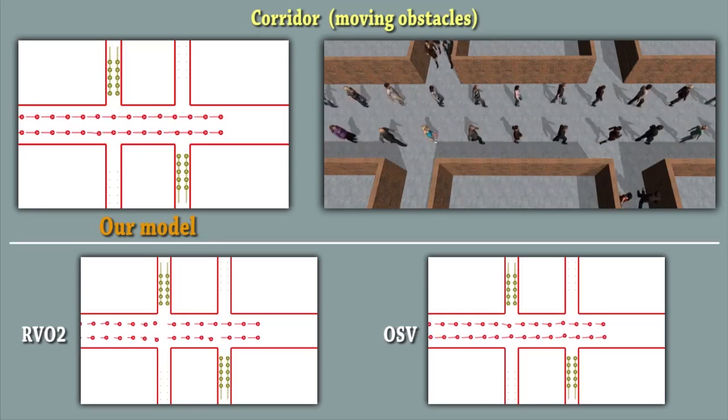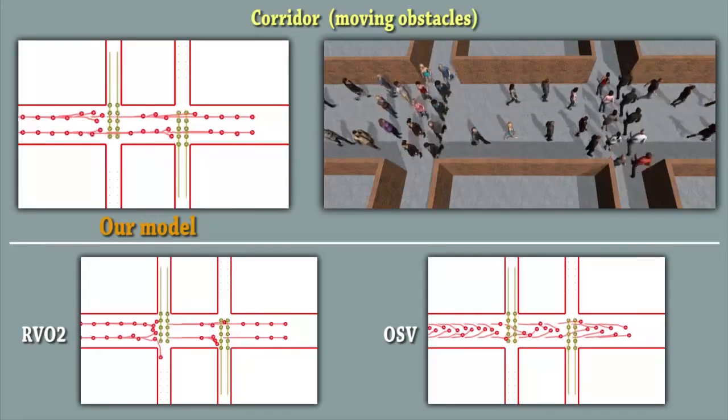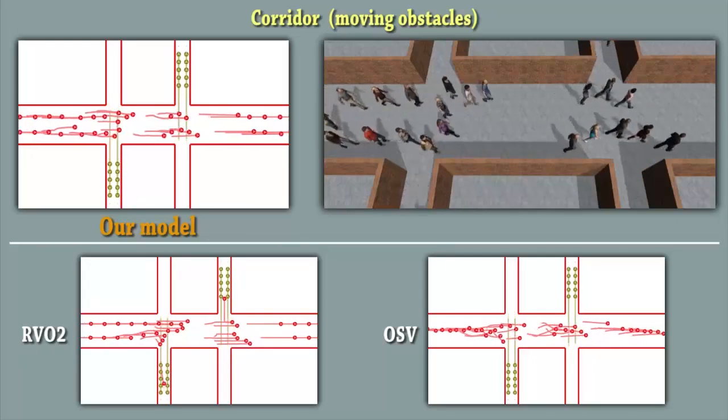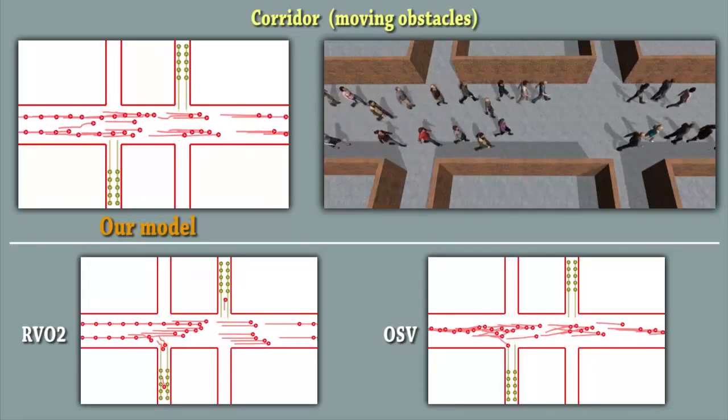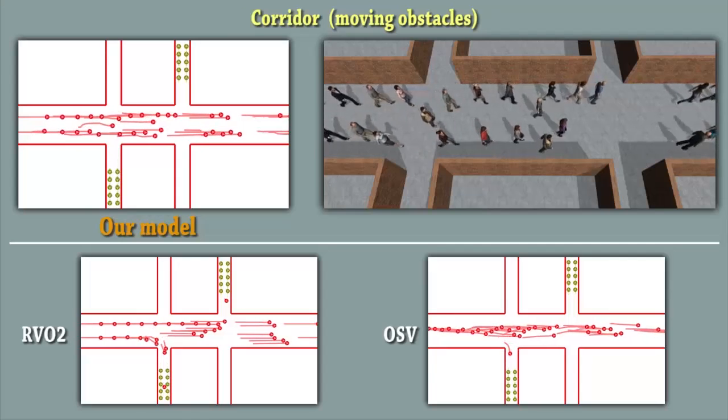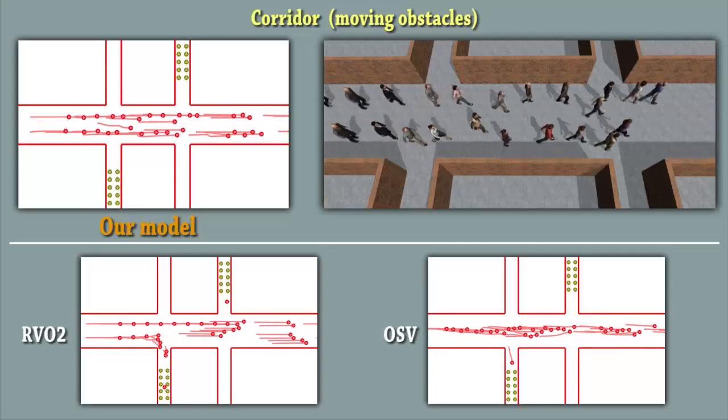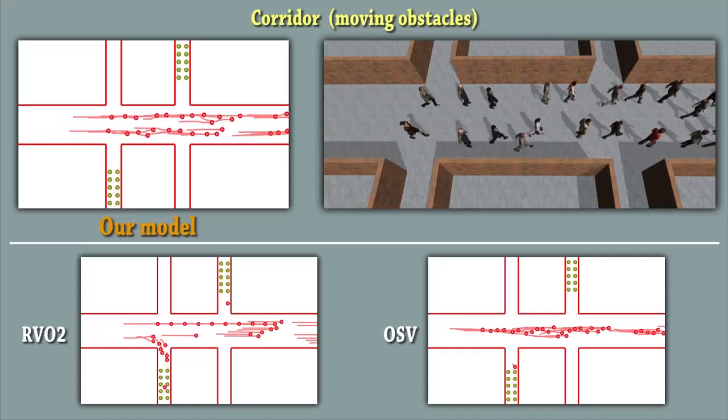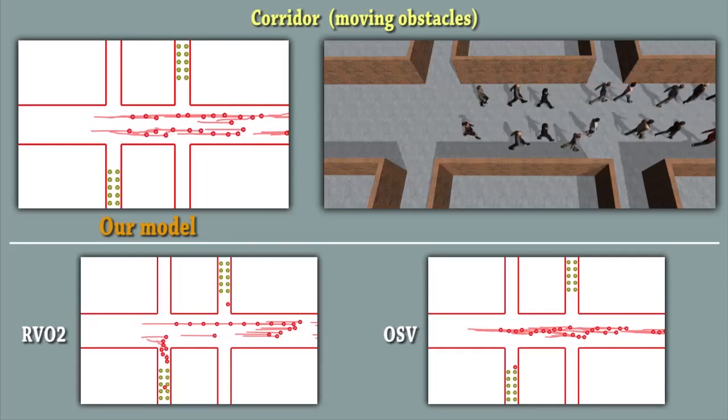In this scenario, our model makes the agents adapt their speeds either by stopping to give way to the moving obstacles, or by accelerating to avoid an imminent collision. In RVO, some agents stay too close to each other after stopping to wait for the obstacles to pass. Moreover, for RVO and OSV, we see agents falling into local minima and entering the wrong corridor.